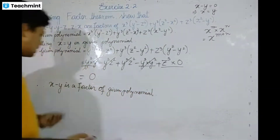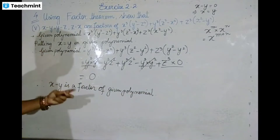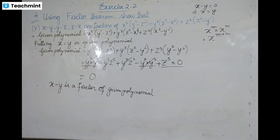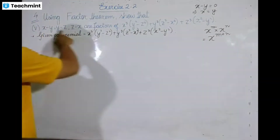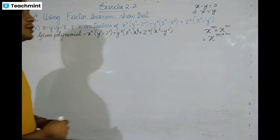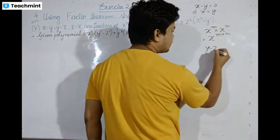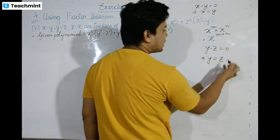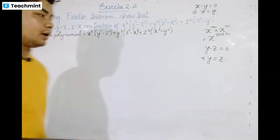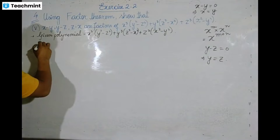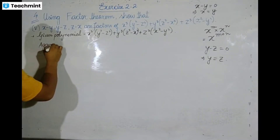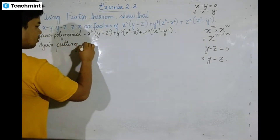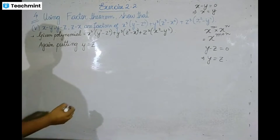Since (x minus y) is a factor of the given polynomial, now we check the next factor. Setting y minus z equal to zero gives y equal to z. Putting y equal to z in the given polynomial.